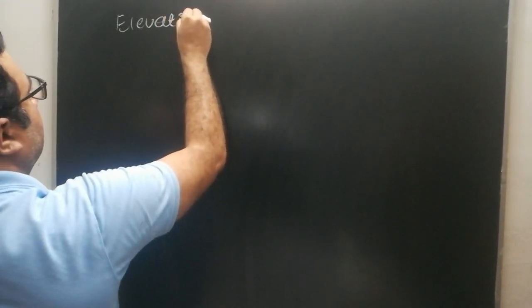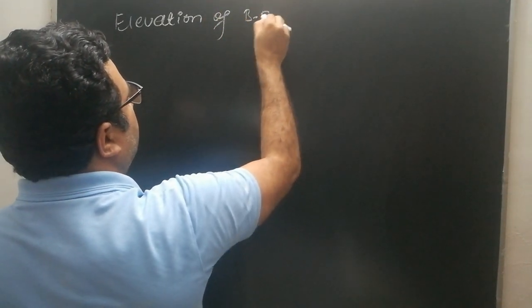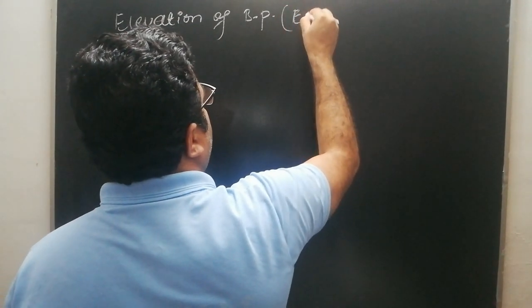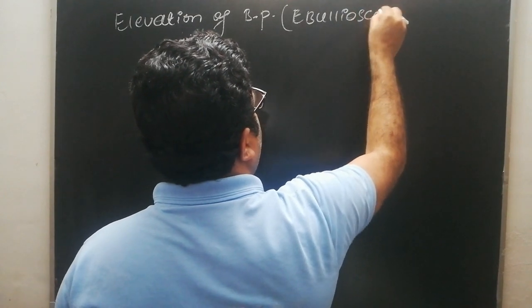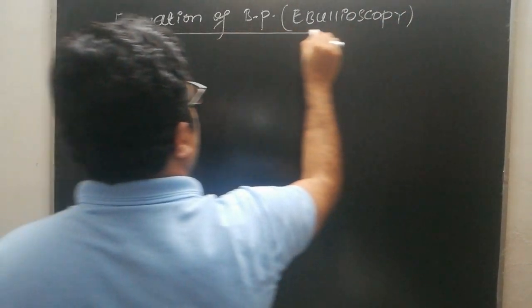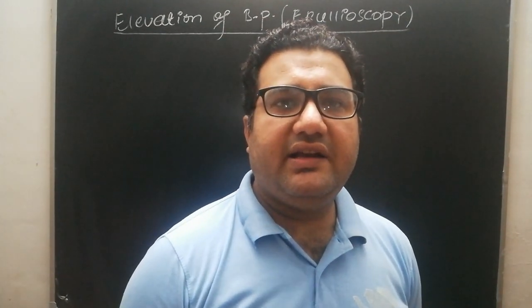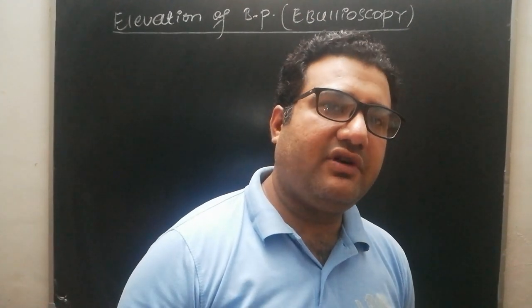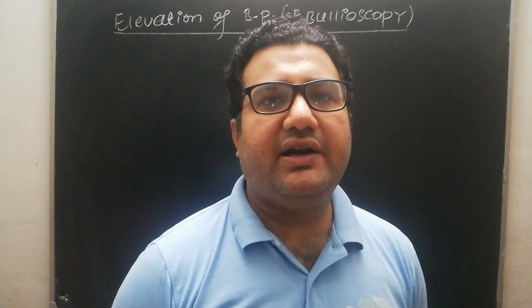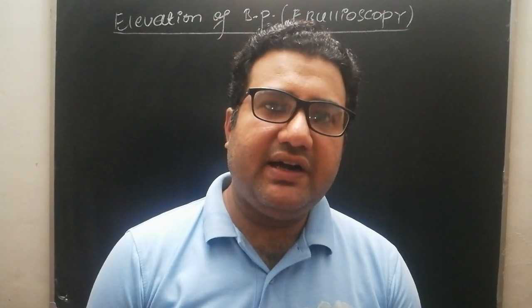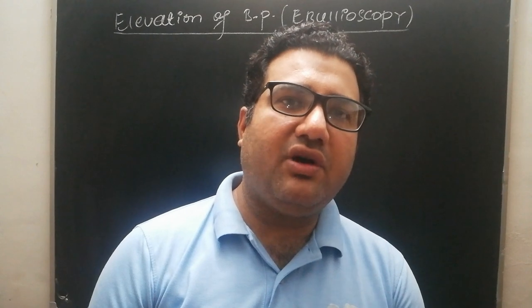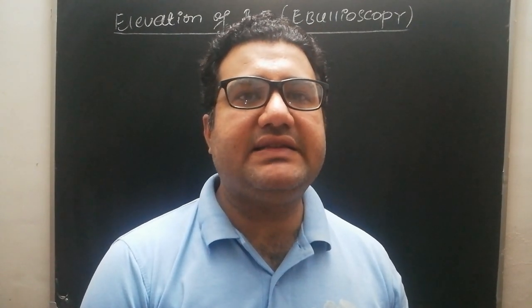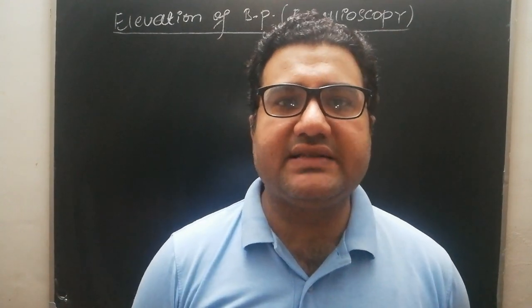Welcome, students. We are going to talk about the second colligative property, which is the elevation of boiling point, also called ebullioscopy. Elevation of boiling point is defined as the increase in the boiling point of a solvent after solution formation, because of the addition of a non-volatile and non-electrolyte solute. When the solvent is pure it has a lower boiling point, but when you mix a non-volatile non-electrolyte solute in the solvent, its boiling point increases.